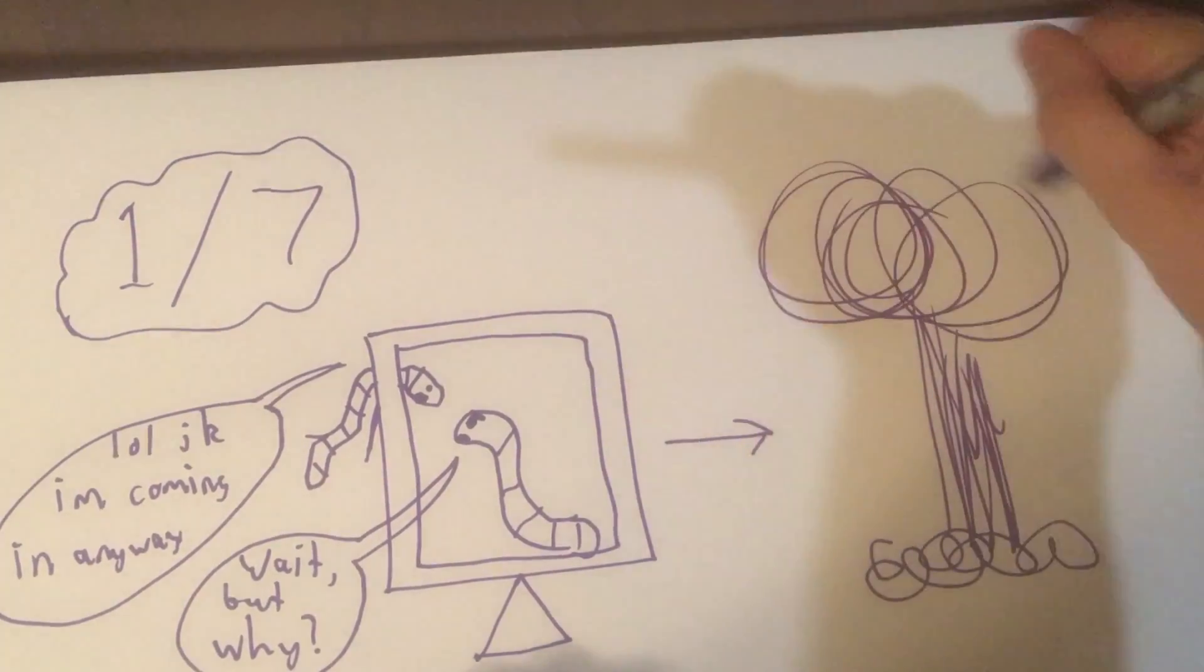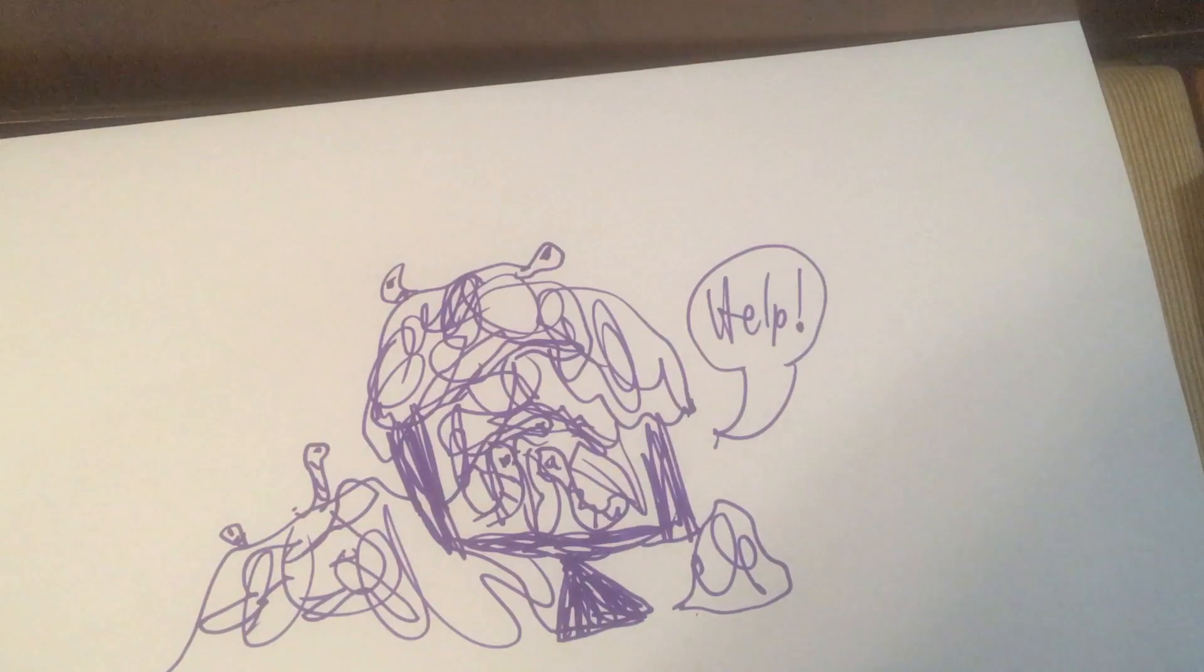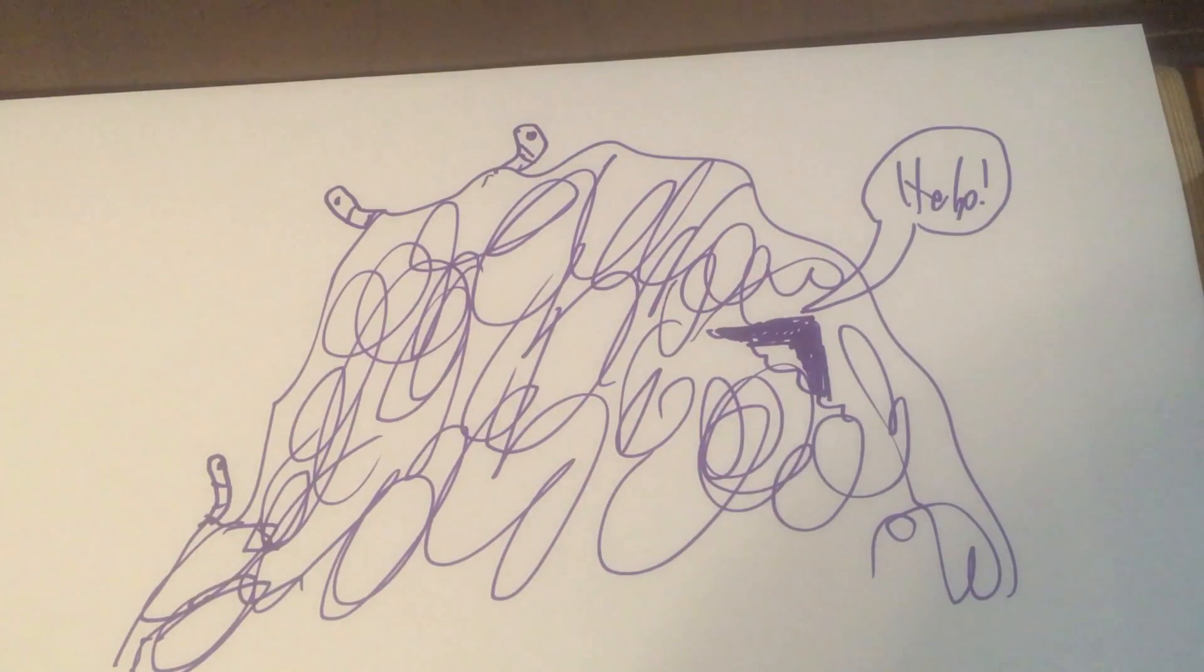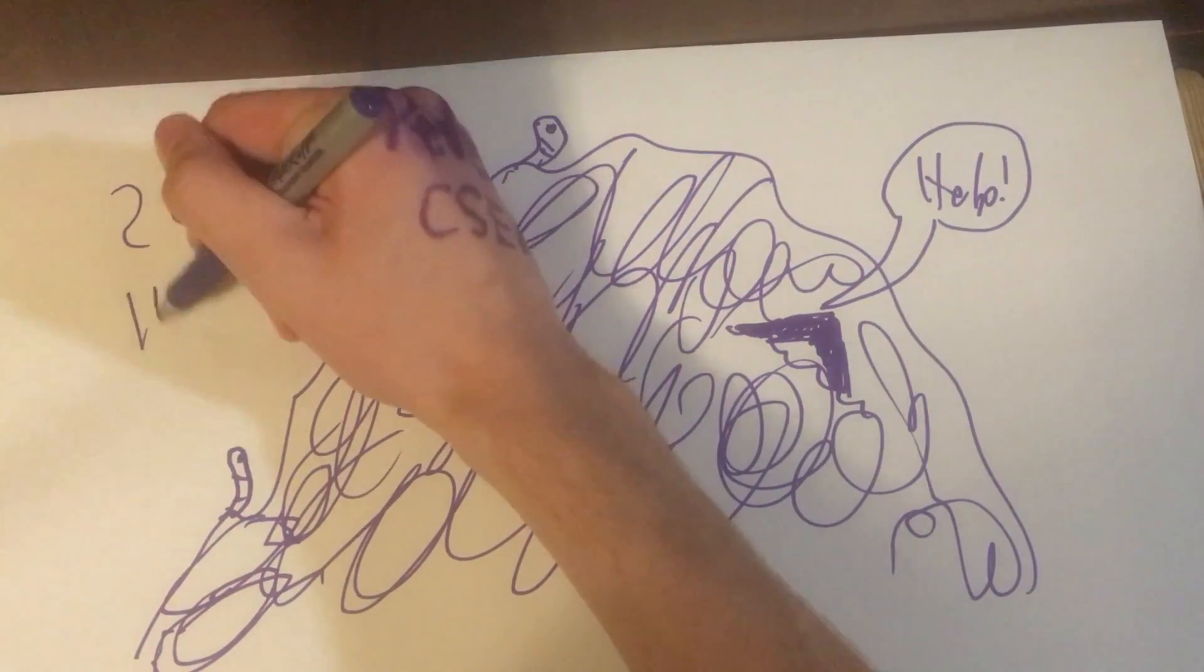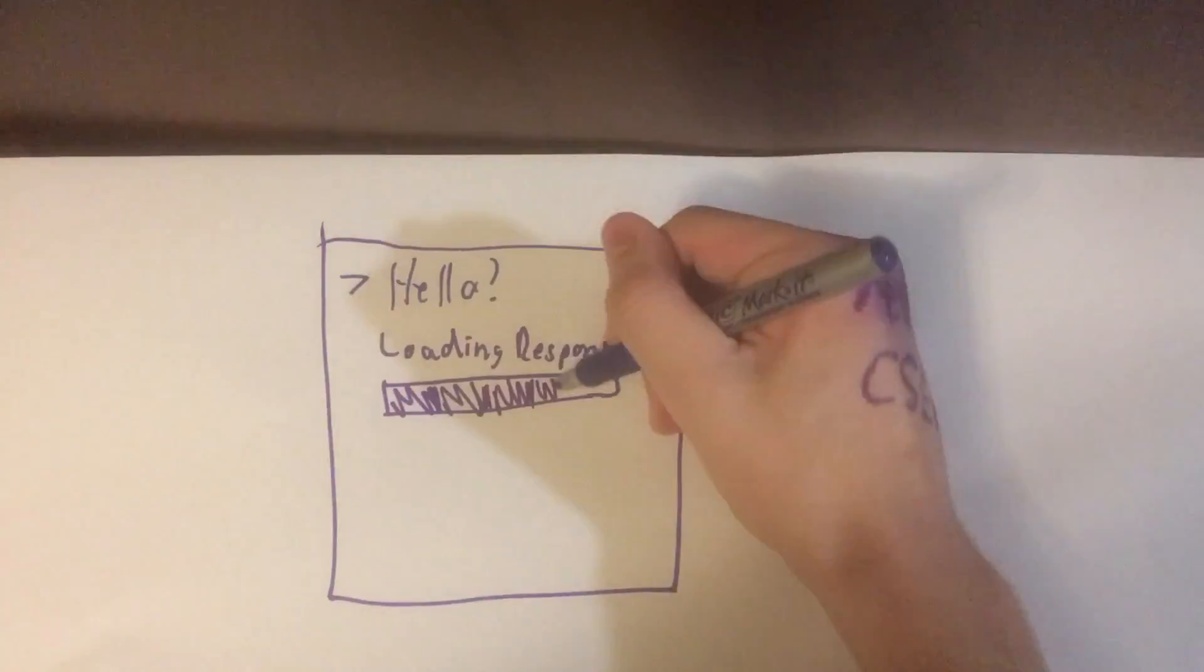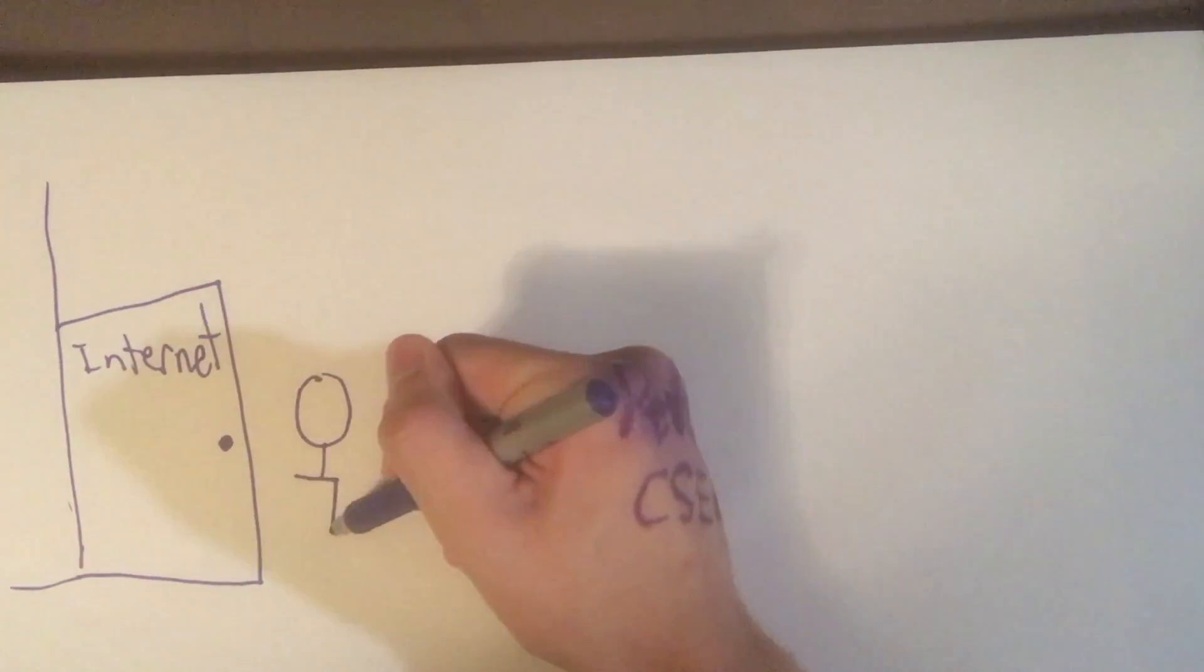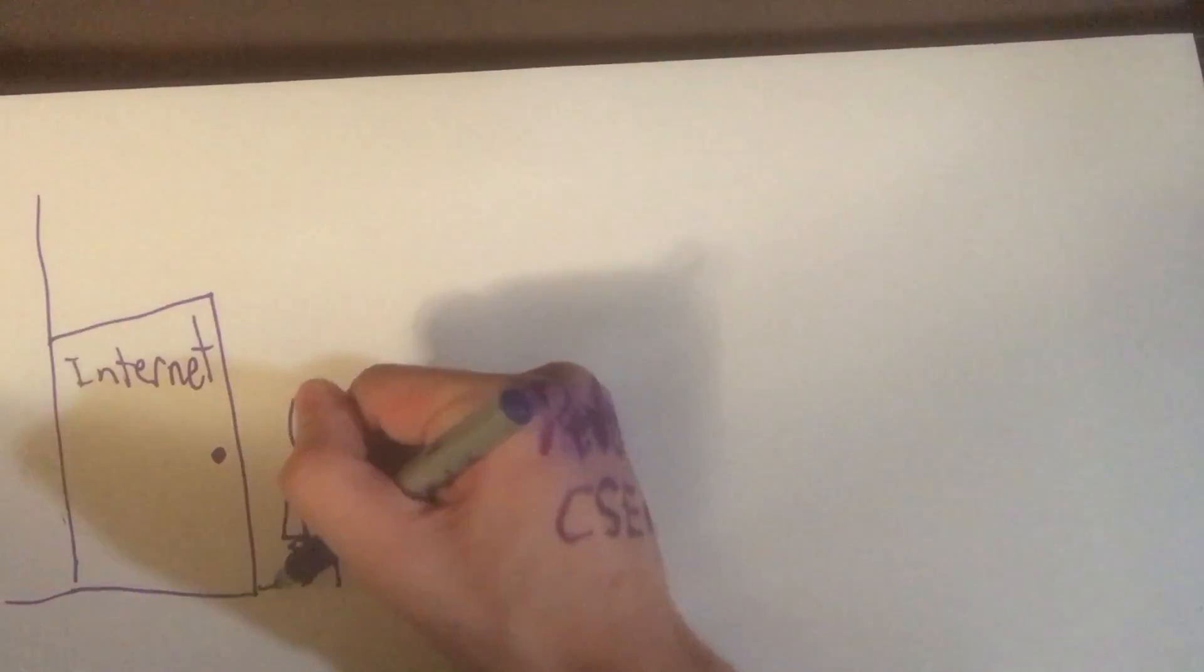And this is exactly what made the worm so destructive. Many computers ended up with thousands, yes, thousands of copies of the worm within 24 hours of the original worm's release. Infected computers would slow down to a crawl, unable to do anything except run these copies until they were taken off the internet and thoroughly cleaned of the worm.